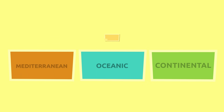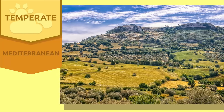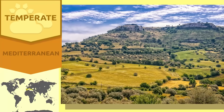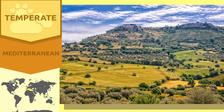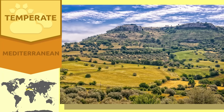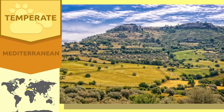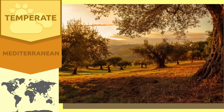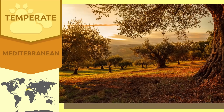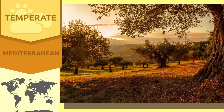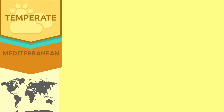The Mediterranean climate, the oceanic climate, and the continental climate are temperate climates. The Mediterranean climate is located along the Mediterranean coast and some parts of its interior. Temperatures are high during summer and mild in winter.